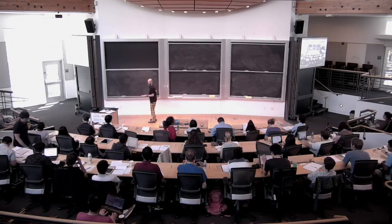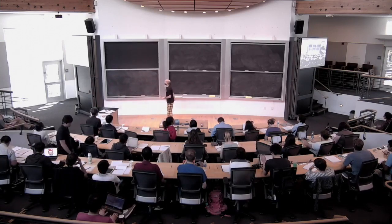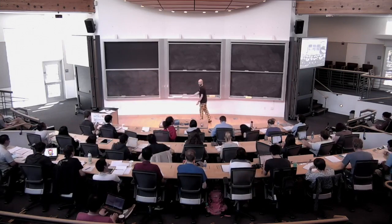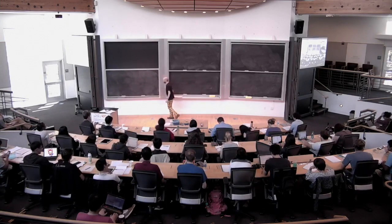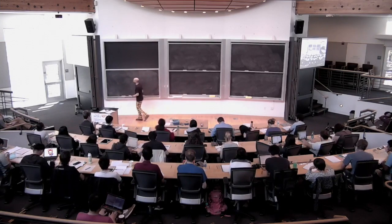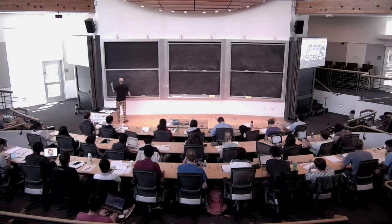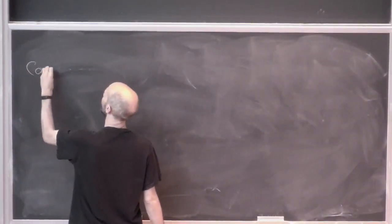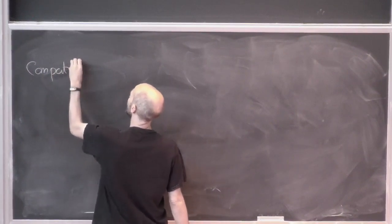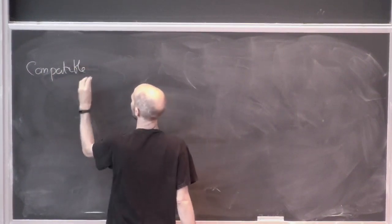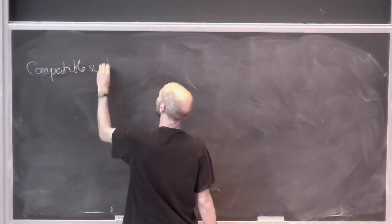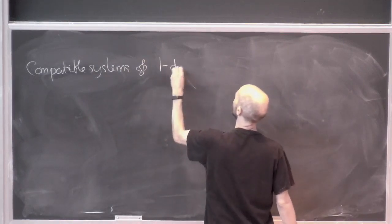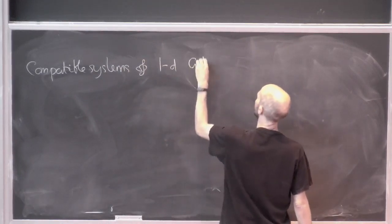Right, so we're going to prove the global Langlands conjectures for GL1 over a number field today. Right now. This is kind of crazy. So here's the setup. What do we know? Compatible systems of one-dimensional Galois representations.